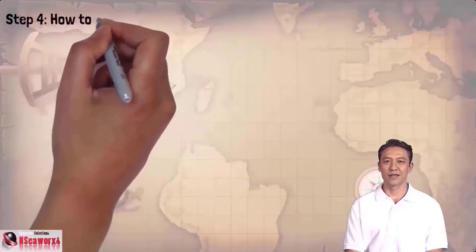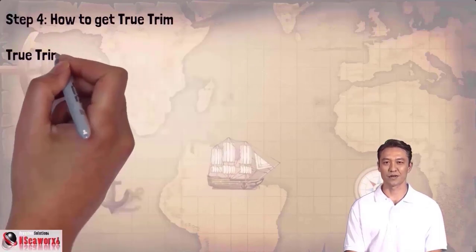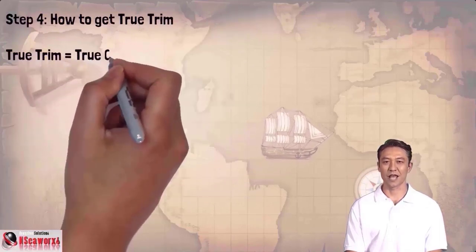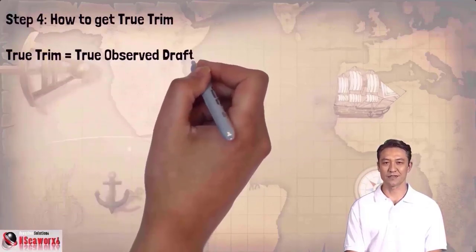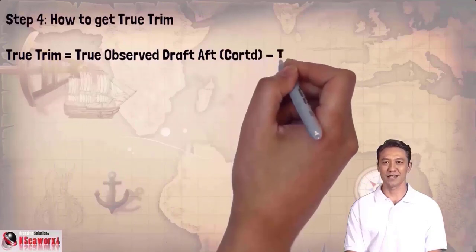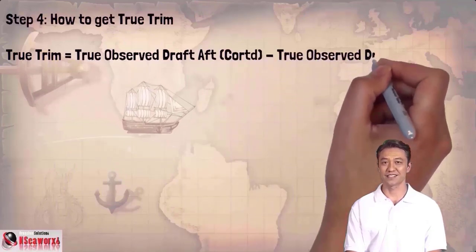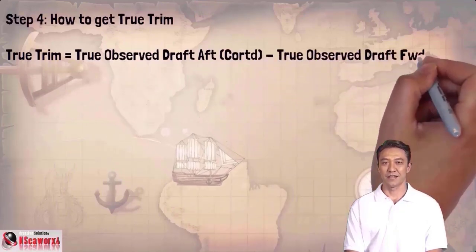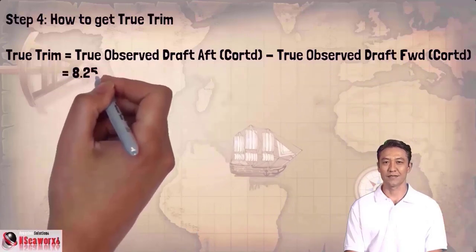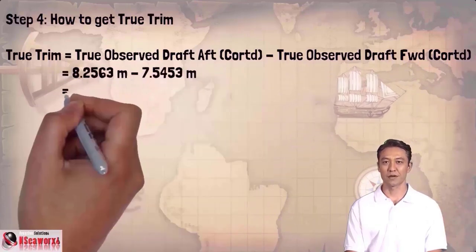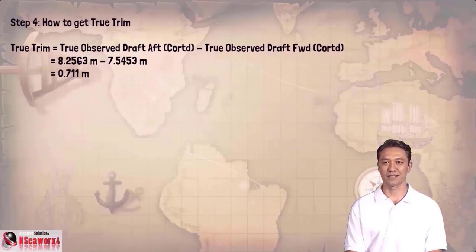Continuing on, Step 4: how to get true trim. True trim equals true observed draft aft corrected minus true observed draft forward corrected, which equals 8.2563 meters minus 7.5453 meters, giving a true trim of 0.711 meters.